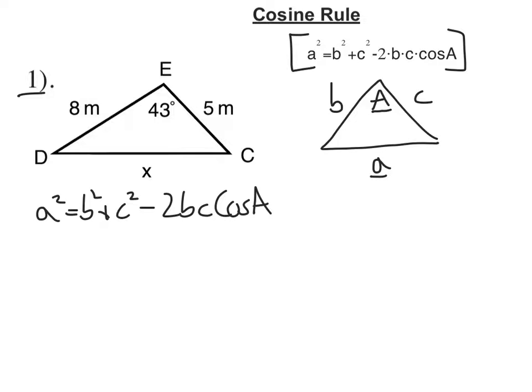Formula type question, sub in the values. So a is x squared. b we'll say is 8 squared plus 5 squared minus 2 times 8 times 5 times the cosine of the angle. That's 43, it's opposite to the side we want to work out.